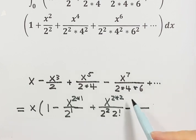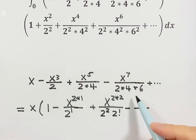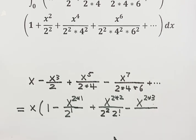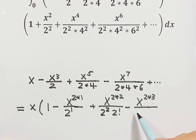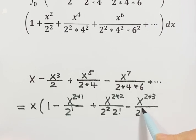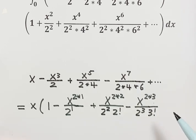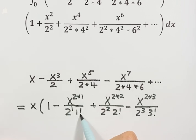Next: x to the sixth, we put x to the power 2 times 3. Then take out a factor 2 from each, so we have 2 to the third. Then we still have 1 times 2 times 3, so that's 3 factorial. So then here we have to put a 1 factorial.